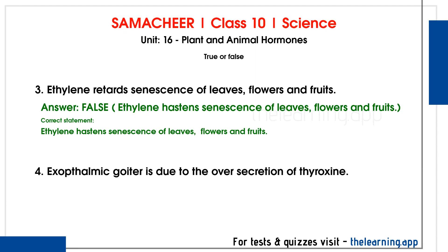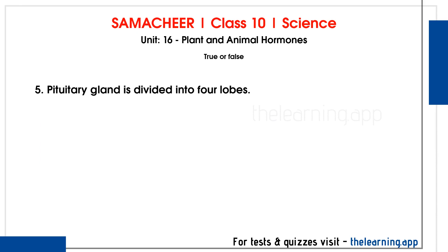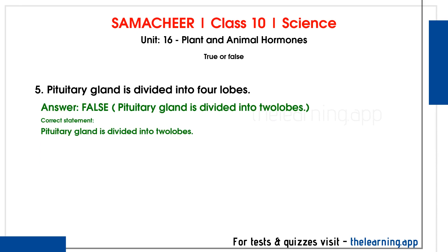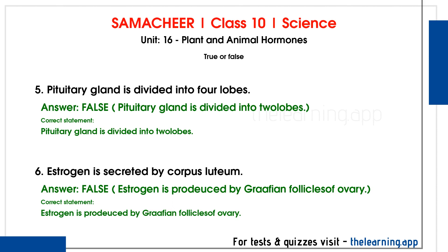Fourth question: Exophthalmic goiter is due to the oversecretion of thyroxine. This is true. Fifth question: Pituitary gland is divided into four lobes. This is false. The pituitary gland is divided into two lobes. Sixth question: Estrogen is secreted by corpus luteum. This is false. Estrogen is produced by the Graafian follicles of the ovary.